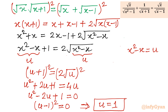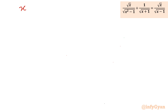Now back-substituting u = x² minus x: x² minus x equals 1, so x² minus x minus 1 equals 0. Applying the Sridharacharya (quadratic) formula.